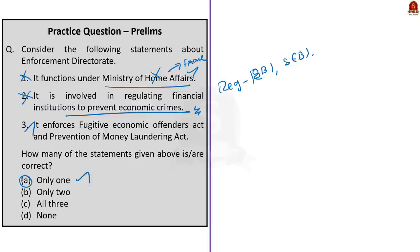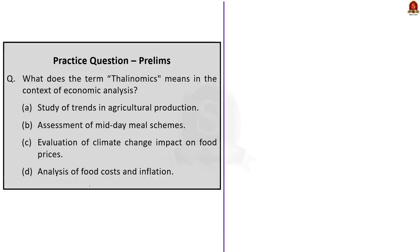Moving on to the third question: what does the term thalinomics mean in the context of economic analysis? The correct answer here is option D, analysis of food cost and inflation.